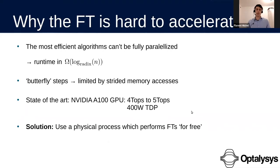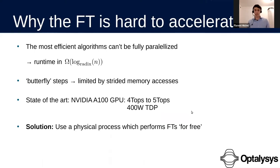The solution we propose at Optalysis is, instead of using electronic hardware which doesn't seem well suited for the Fourier transform, to use a different physical process which will naturally perform the Fourier transform — quote-unquote — for free, meaning without us having to do any work on the system to do the computation. Such a physical process exists, and it's one we're all familiar with to some extent: the propagation of light.